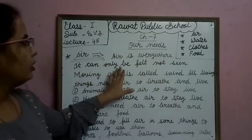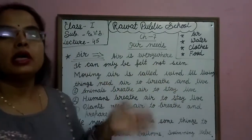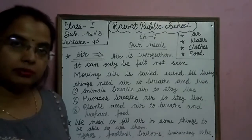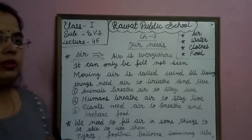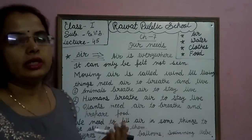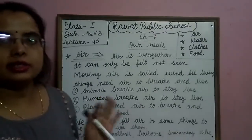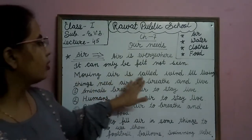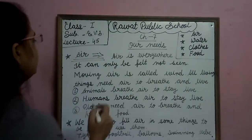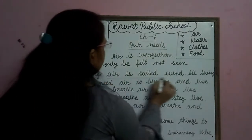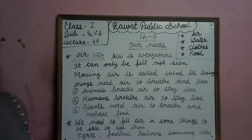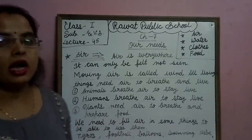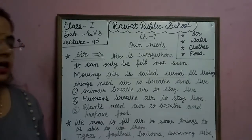It can only be felt, not seen. Ham hawa ko sirf feel kar sakte hain, usko dhek nahi sakte hain. We only feel air, can't see. Moving air is called wind. Hawa joh chalti hain, usko Wind kehte hain.